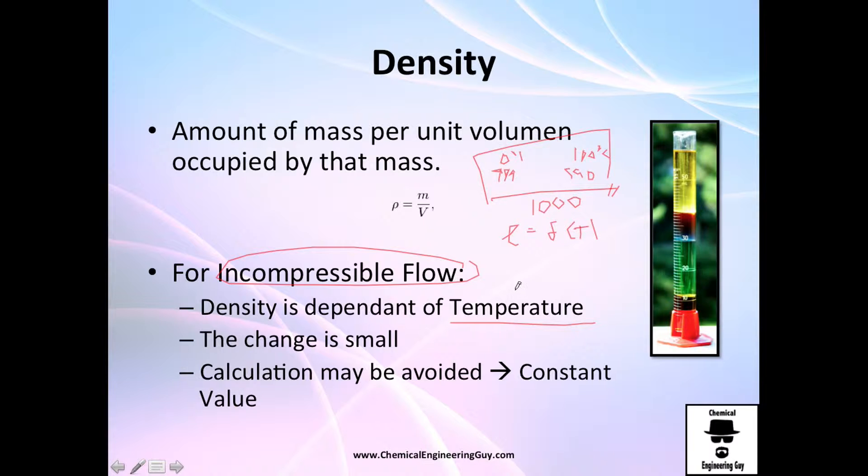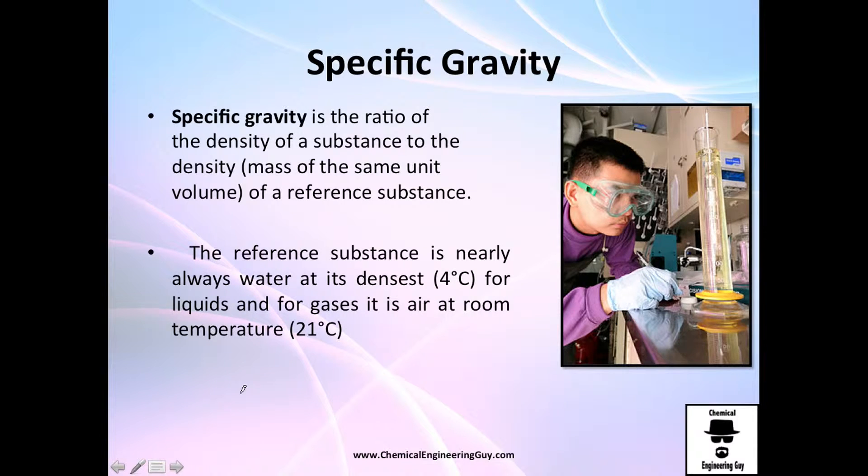Now we have this concept of specific gravity. It's essentially the ratio—so it's important, it's a ratio with no units—of the density of a substance versus the density of a reference substance. It sounds kind of crazy but it's not. For example, when we use water, let's say the specific gravity of this fluid is about 0.8.